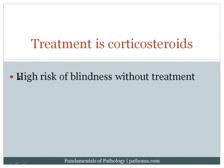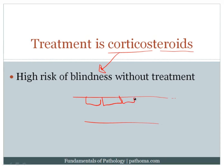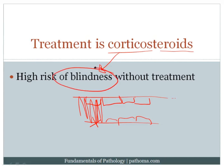The treatment is corticosteroids, and we need to give treatment as soon as we suspect this disorder because there is a high risk of blindness without treatment. Inflammation of the ophthalmic artery knocks out endothelial cells, exposing subendothelial collagen and tissue factor, leading to thrombosis of the ophthalmic artery, cutting blood supply to the eye and causing irreversible blindness. So if we even suspect this disorder, we treat even without biopsy confirmation.